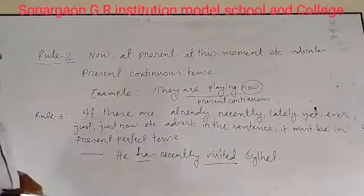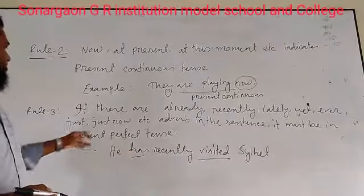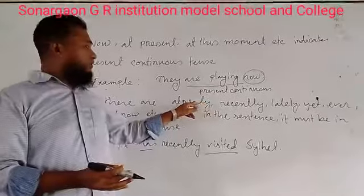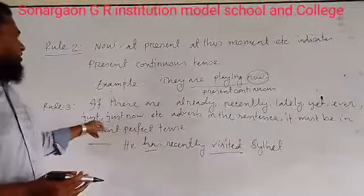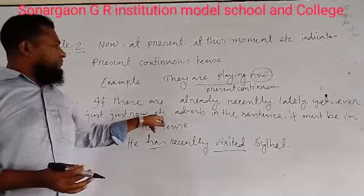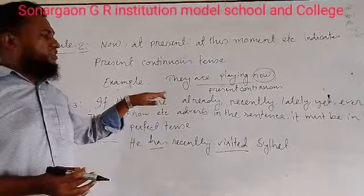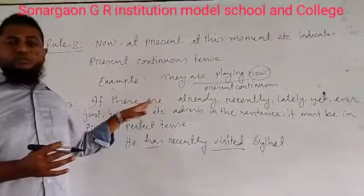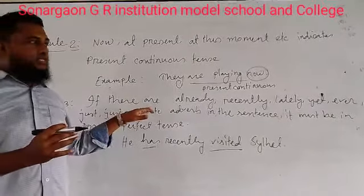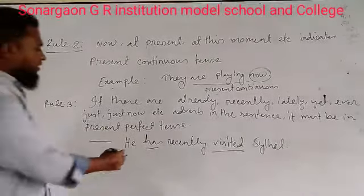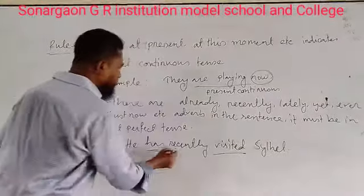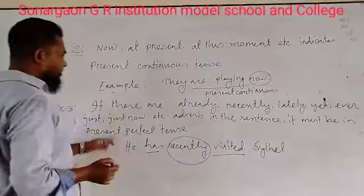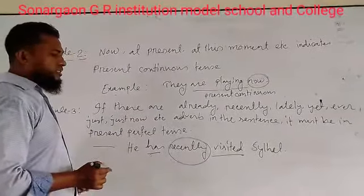If there are adverbs like 'already', 'recently', 'lately', 'yet', 'ever', 'just', or 'just now' in a sentence, you have to remember that such adverbs indicate present perfect tense. That means if any such adverb exists in the sentence, you must know it is present perfect tense. For example: 'He has recently visited Sylhet.' Here, 'recently' is the adverb that indicates present perfect tense — 'has visited' is present perfect.